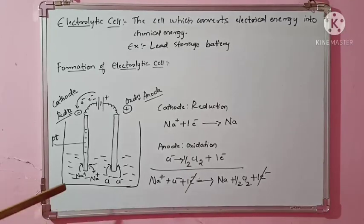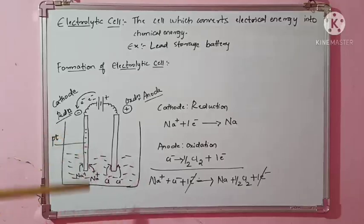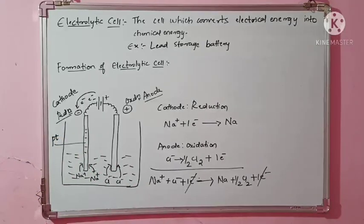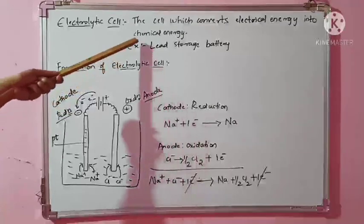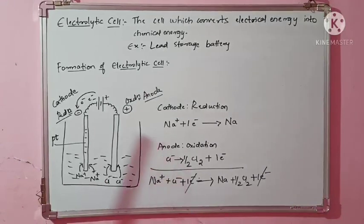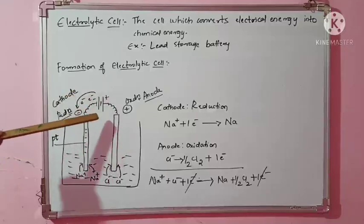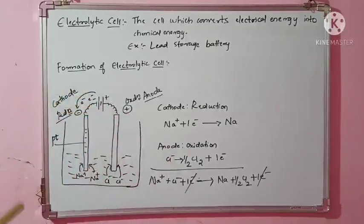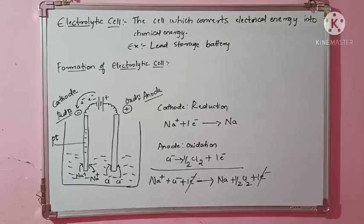To summarize the electrolytic cell: the NaCl solution is taken with two platinum electrodes connected to a battery. There is a cathode and an anode, and a redox reaction takes place because a chemical change must happen. The electrical energy from the battery is converted into chemical energy. I hope you understood what is an electrolytic cell. Thank you.